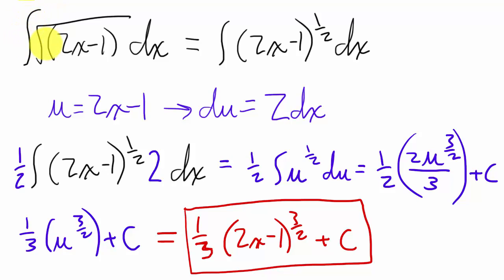So we begin with the integral of the square root of 2x minus 1 dx. We want to render this radical expression in terms of fractional exponents so it'll be easier to integrate. So then we have the integral of 2x minus 1, that quantity to the 1 half dx.